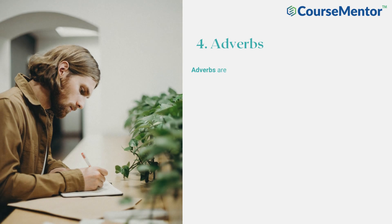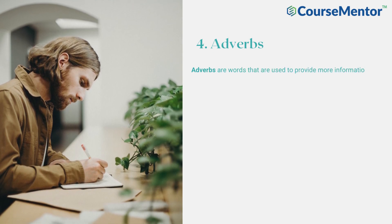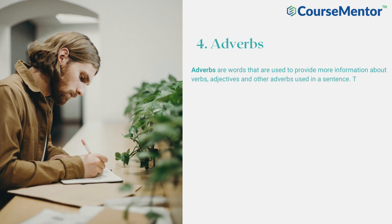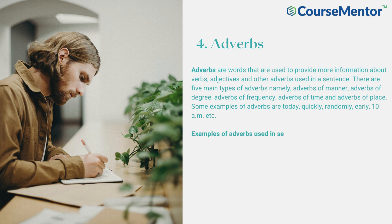Adverbs. Adverbs are words that are used to provide more information about verbs, adjectives and other adverbs used in a sentence. There are five main types of adverbs: adverbs of manner, adverbs of degree, adverbs of frequency, adverbs of time and adverbs of place. Some examples of adverbs are today, quickly, randomly, early, 10 a.m., etc.